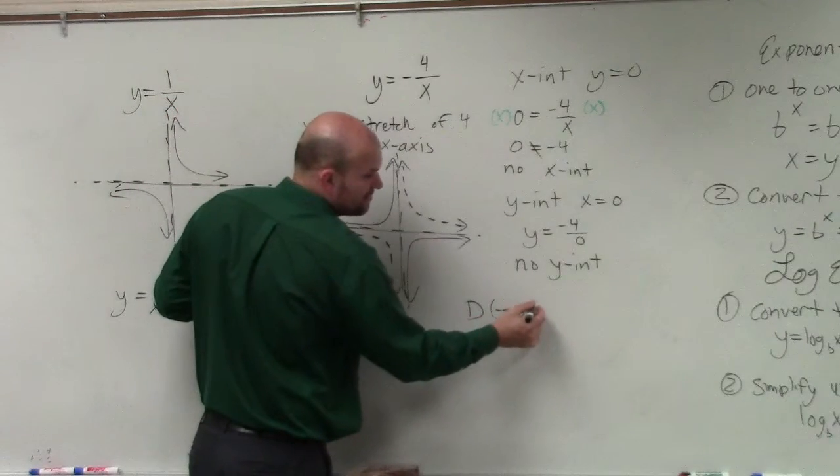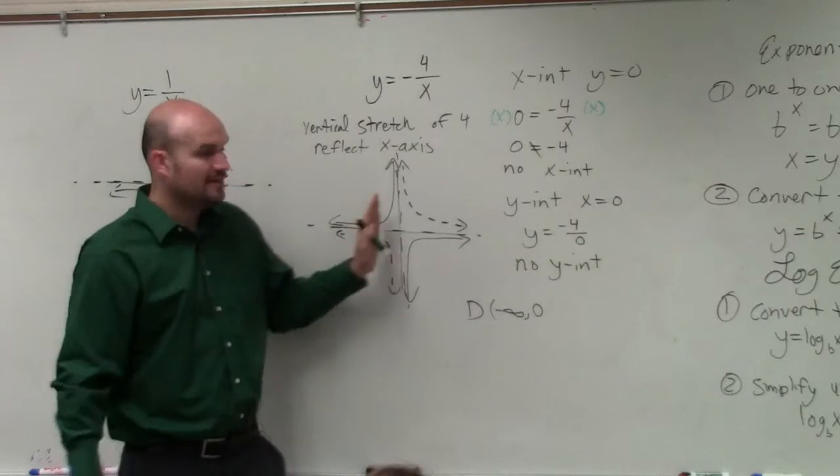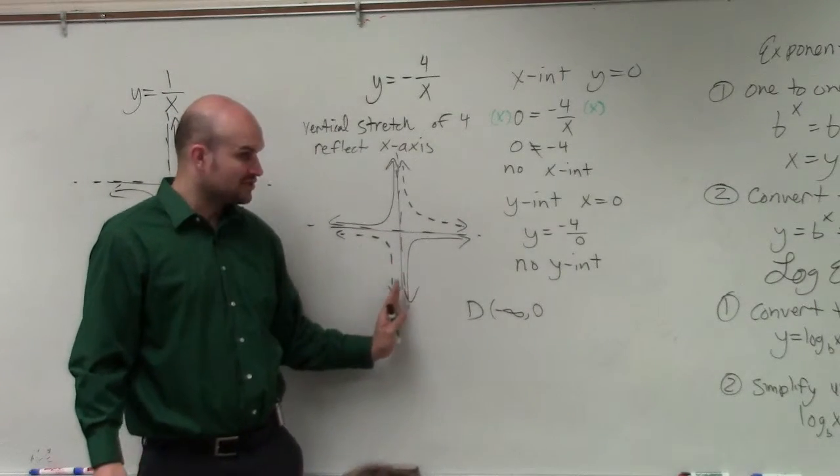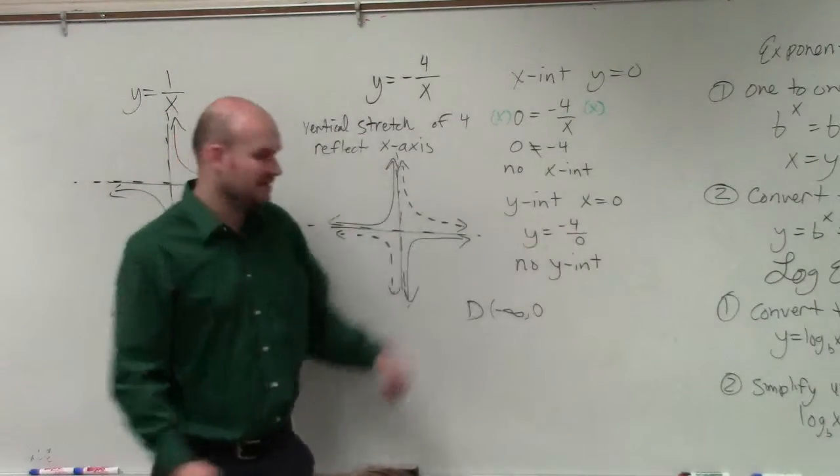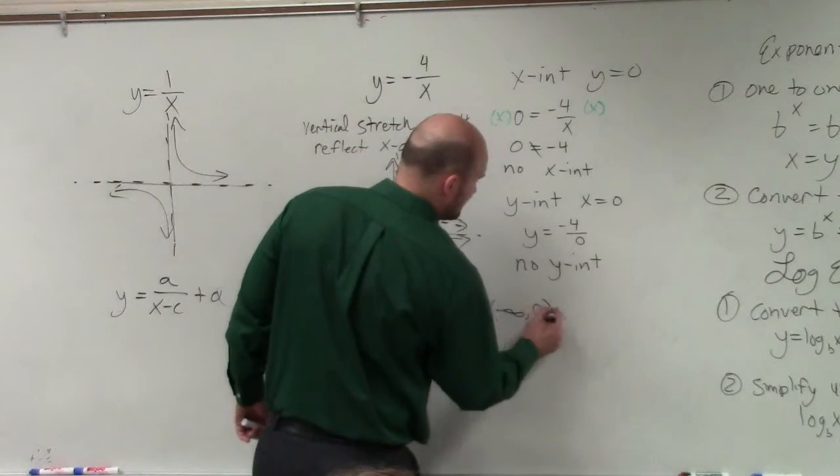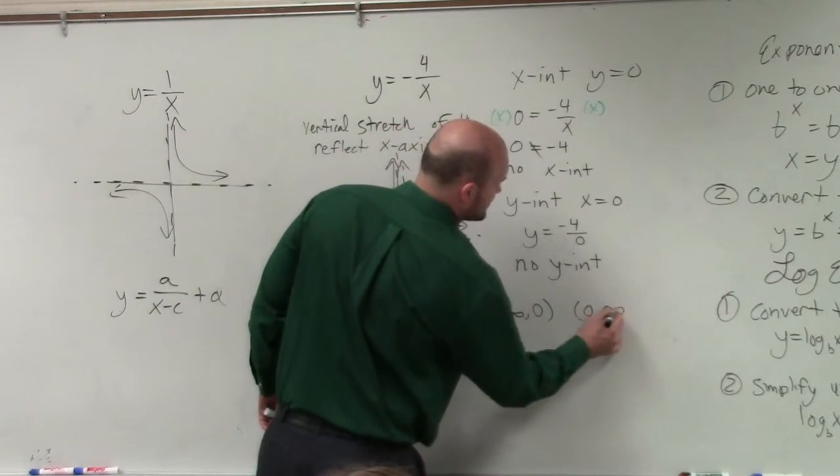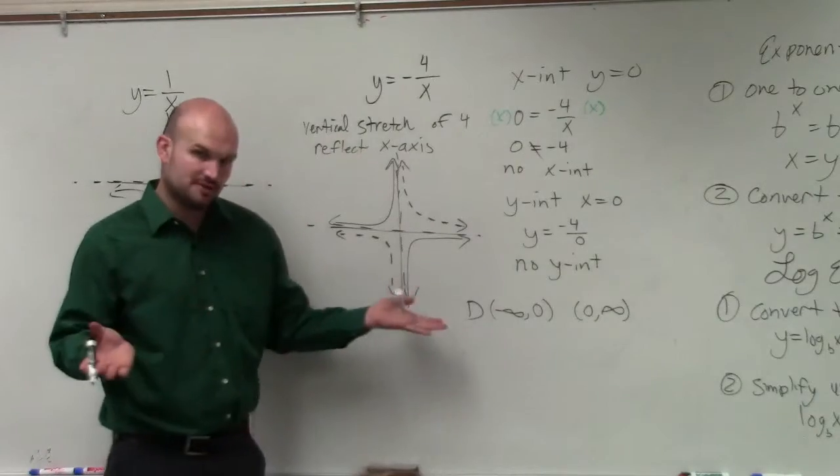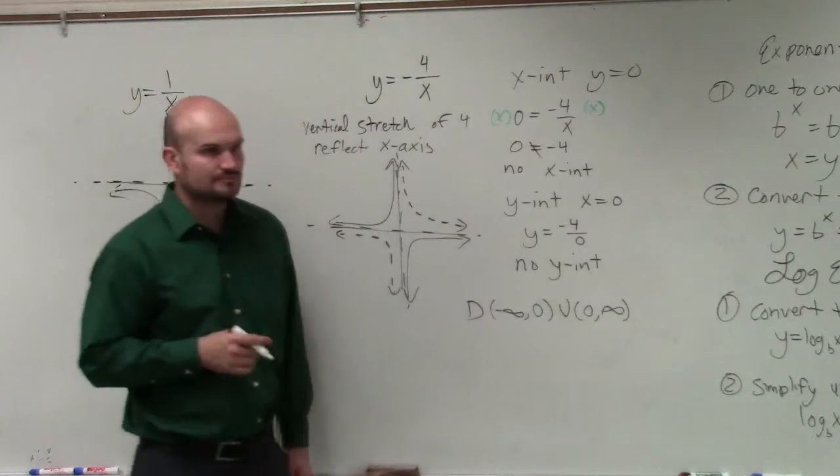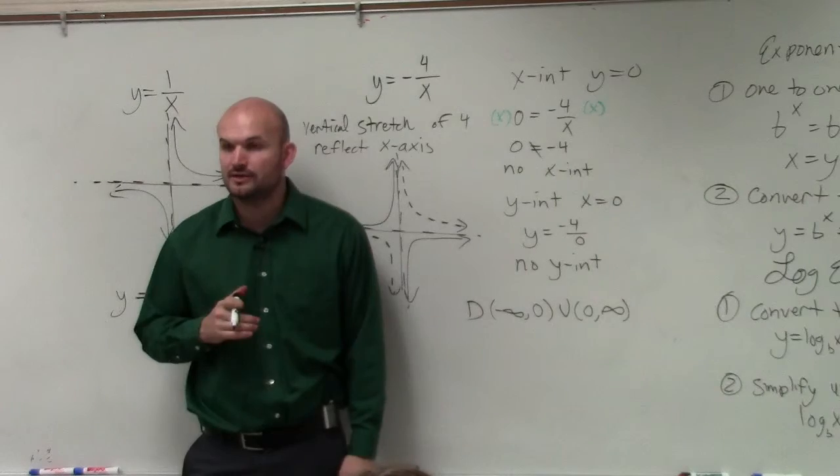So we say the domain is from negative infinity to zero. Then on the other side of zero, it starts going to the right, all the way to infinity. So we say the domain is from negative infinity to zero and zero to infinity. Well, both of those are a part of our domain, so we'd use union. So the big U would be union together.